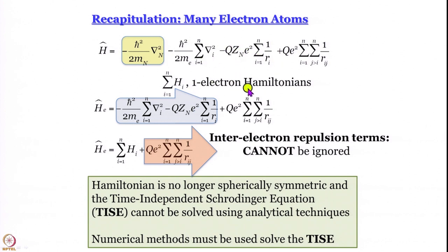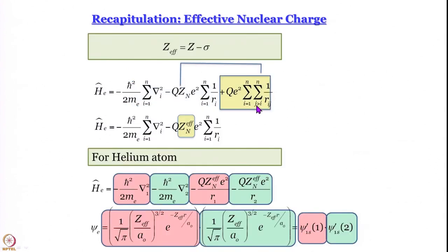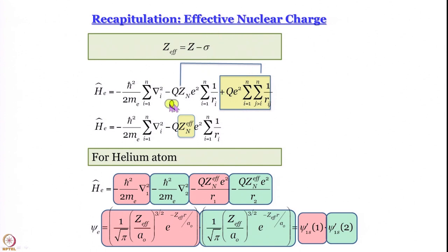What you are left with is this electron-electron repulsion term, which we have established we cannot ignore. So what we do is incorporate this electron-electron repulsion term into the shielding constant, and we work with not the actual nuclear charge but the effective nuclear charge.